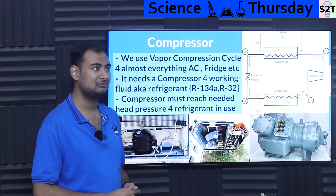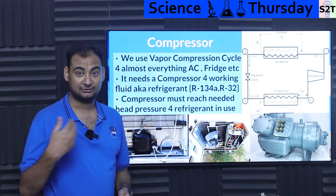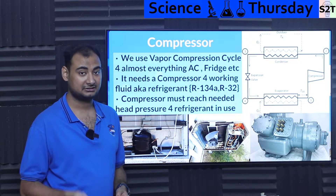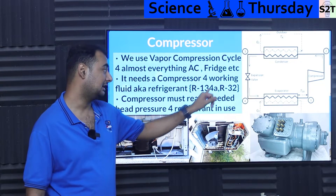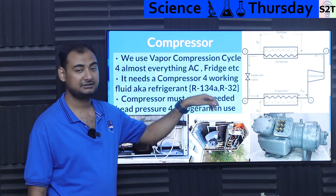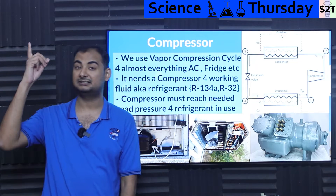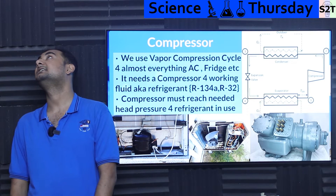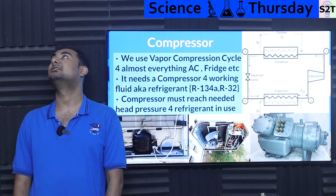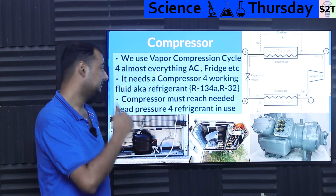We have a bonkersly large number of refrigerants — almost 100 exist at this point. In my own home I've already got three refrigerants: R32 in one of my ACs, R134 in the refrigerator, and R410A in the modern AC running here. And there are many more.